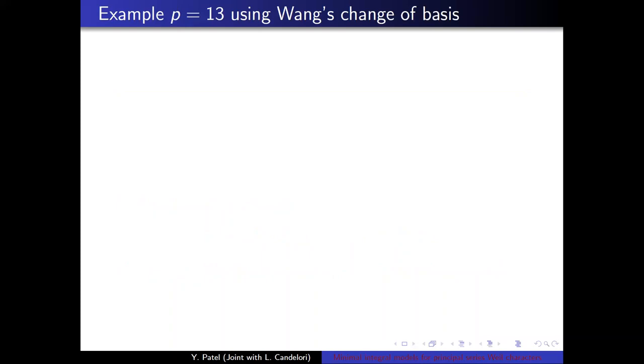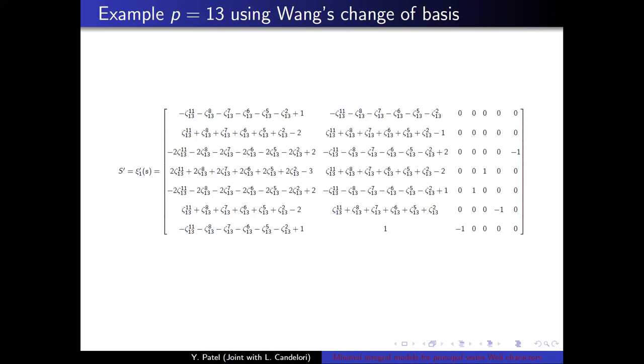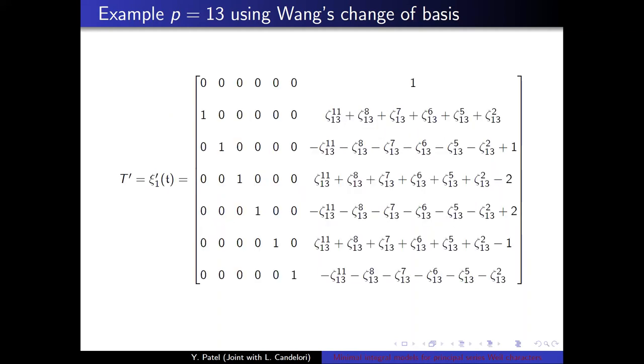That is setting Z1 prime of mathfrac S and Z1 prime of mathfrac T to these two expressions. We yield explicit integral models for the principal series Weil characters over the rings Z adjoined with the principal root of unity. So let's illustrate this with P equals 13 using Dr. Wong's change of basis technique. S has no fractions. They have something more interesting going on now, but they have no fractions. And neither does T.